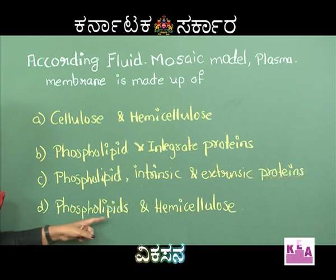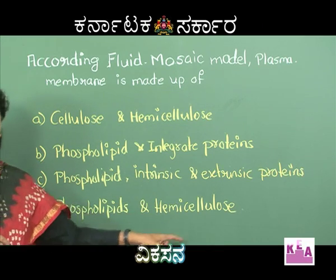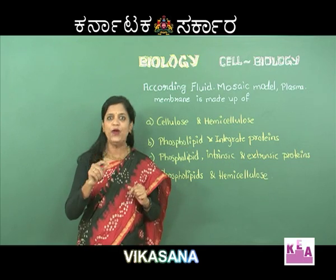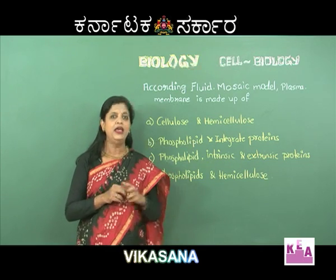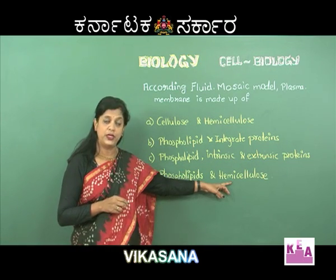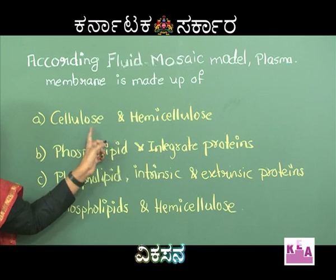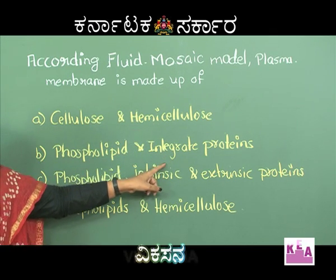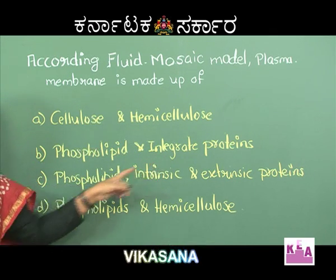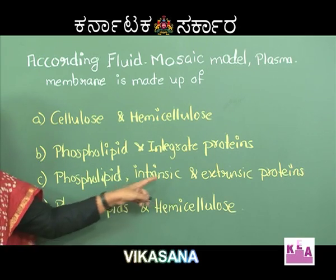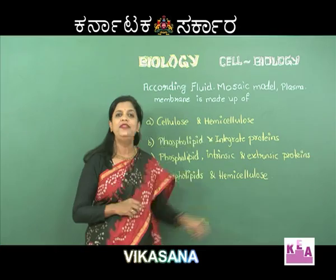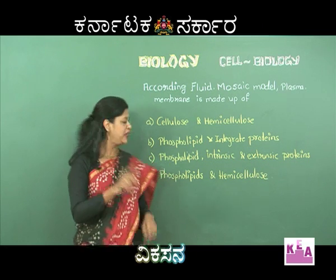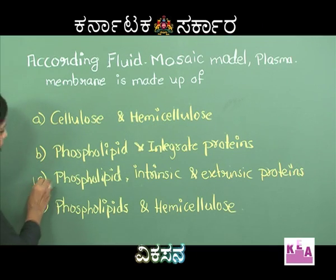The fourth option is phospholipids and hemicellulose. Hemicellulose is ruled out because it is not a component of the plasma membrane. The third option - phospholipids, intrinsic and extrinsic proteins - is the most appropriate answer. C option is the right option.